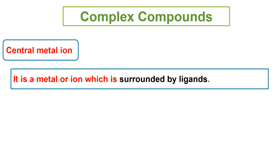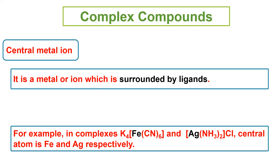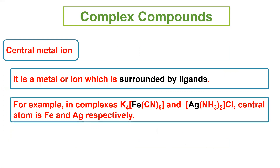Central metal ion: It is a metal or ion which is surrounded by ligands. For example, in the complex K4Fe(CN)6, iron (Fe) is the central metal ion. K ion is there to balance charge, lekin woh central metal nahi hai. Iron central metal ion hai, kyunke woh ligands se surrounded hai.